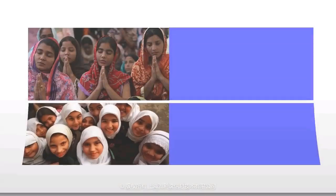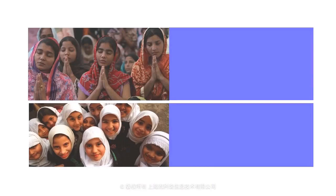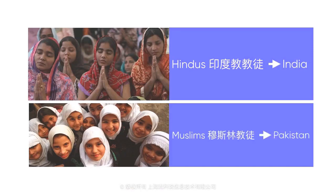In 1947, after the creation of the states of India and Pakistan, there was massive religious migration. Hindus migrated to India and Muslims migrated to Pakistan. Due to past conflicts, these groups often attacked each other as they traveled, and it's said that up to one million people were killed.